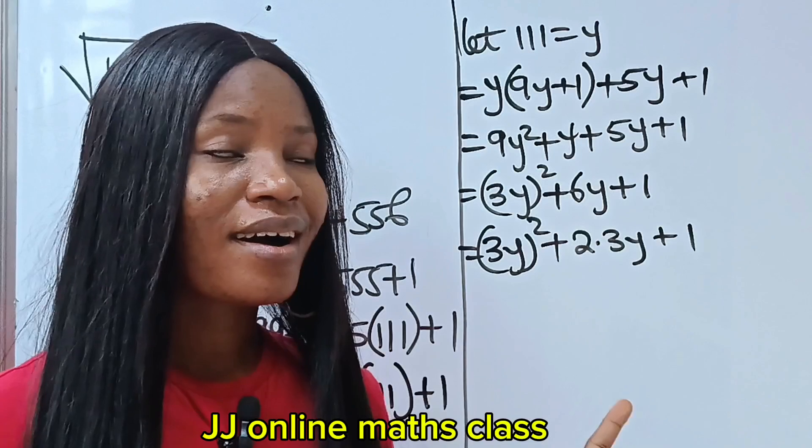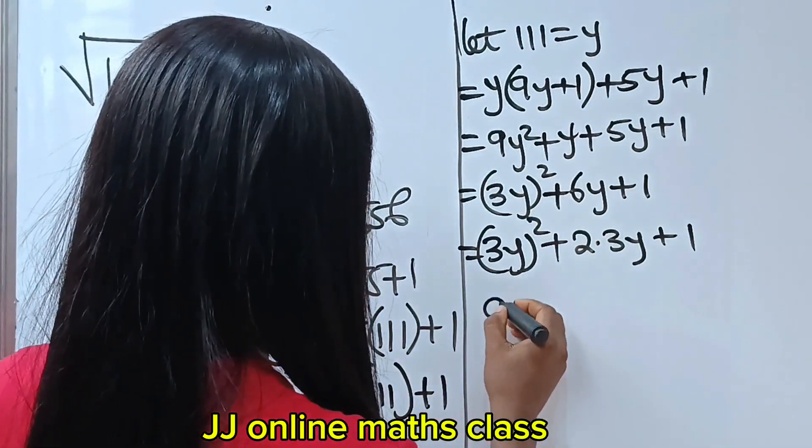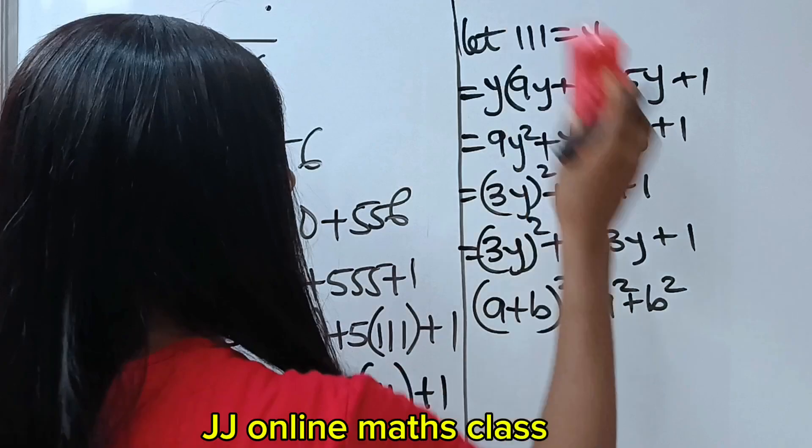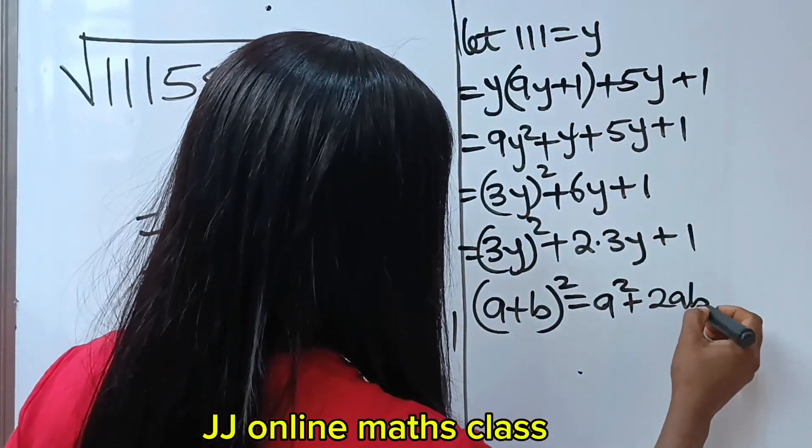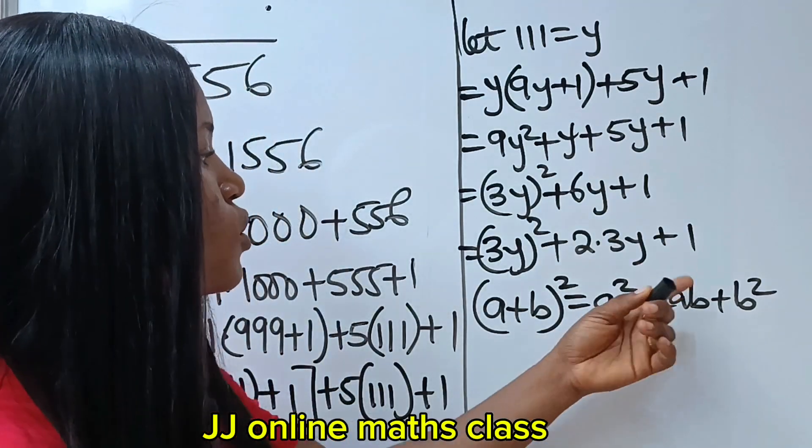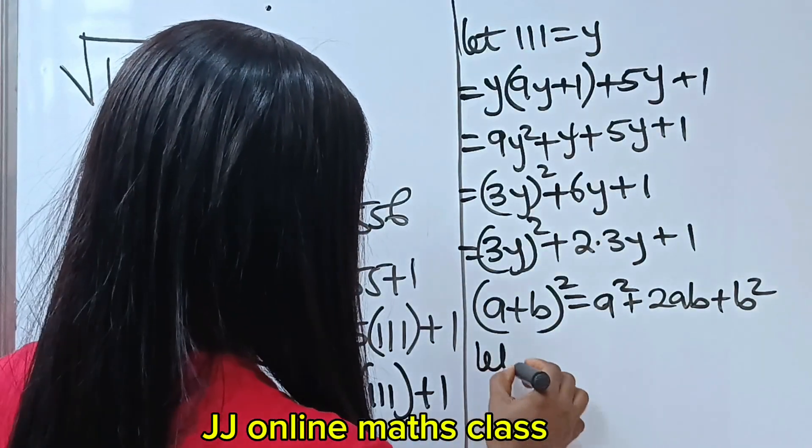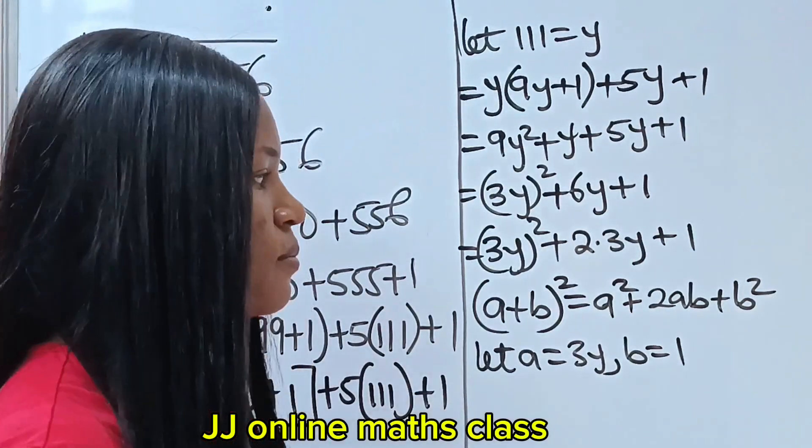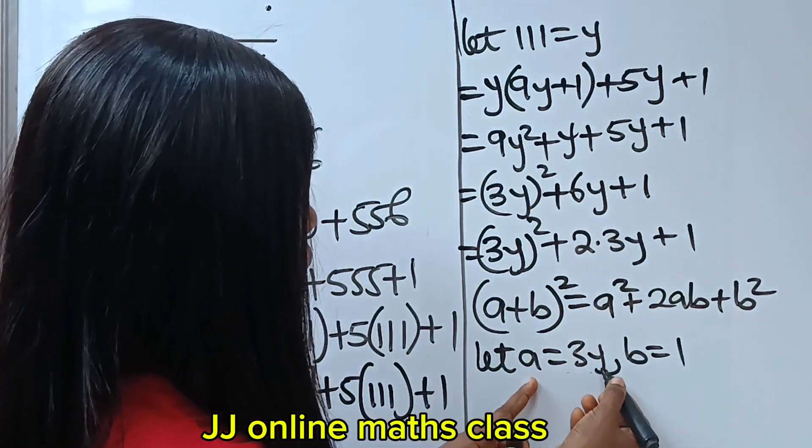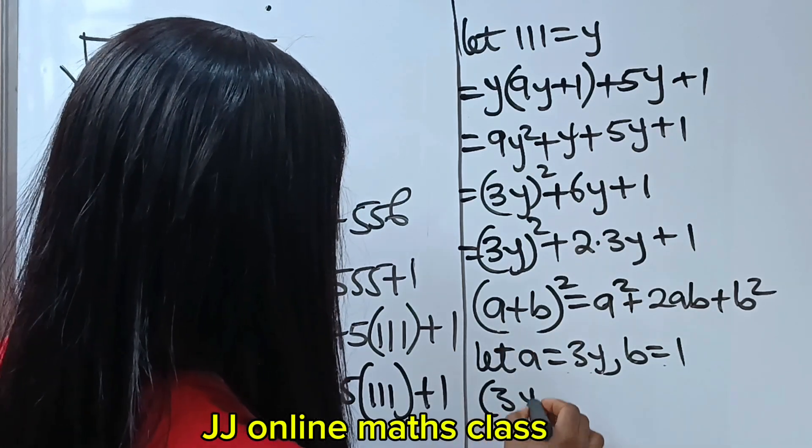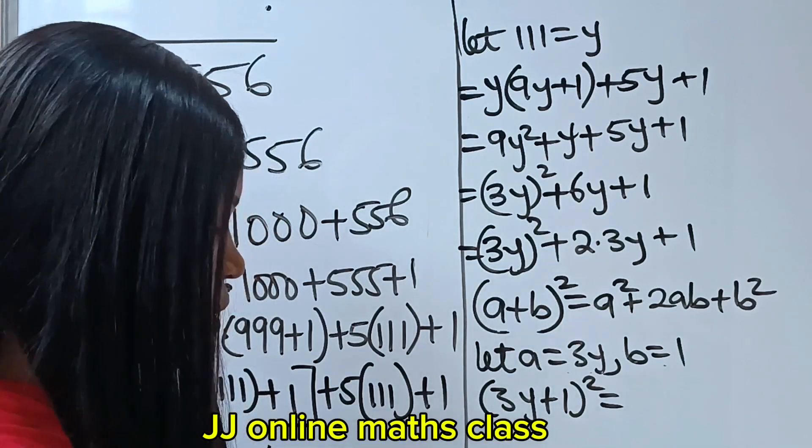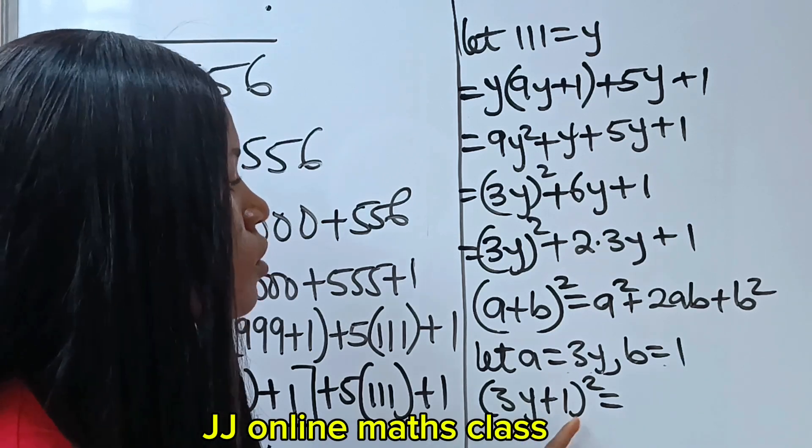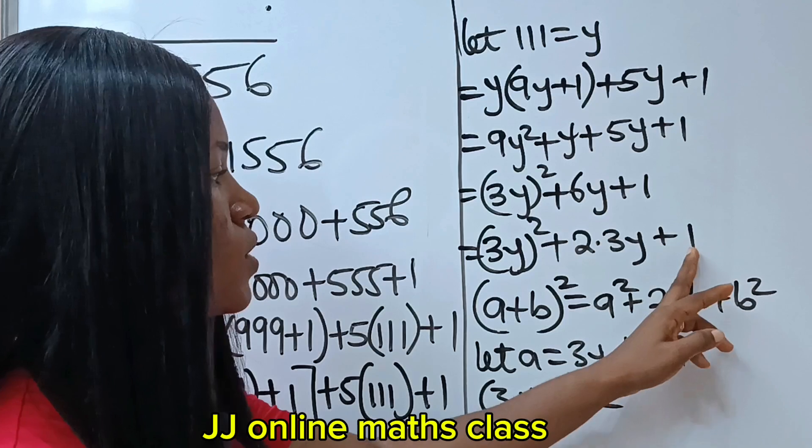Now, I want us to recall an algebraic identity that states that a plus b raised to the power of 2 is equal to a squared plus 2ab plus b squared. I want us to look at this very well. If we say let our a be equal to 3y and our b be equal to 1, we have something. Because if we say let our a be equal to 3y and b be equal to 1, that means if we have 3y plus 1 all squared, if we expand it, we are going to have 3y squared, according to a squared, plus 2 multiplied by 3y multiplied by 1, which is still give us this, then plus 1 squared, which is still give us 1.